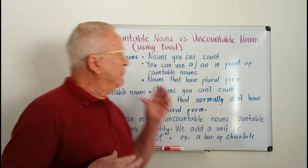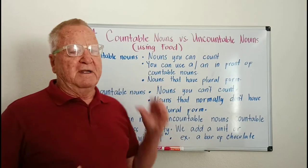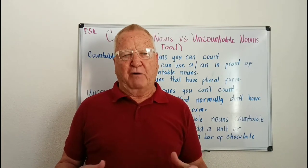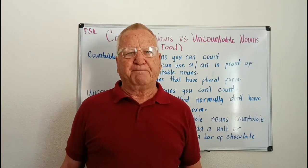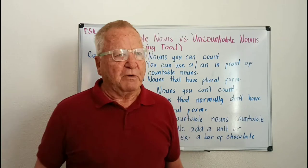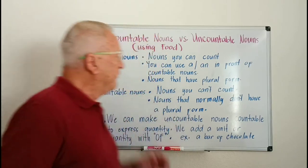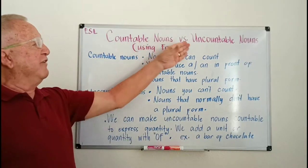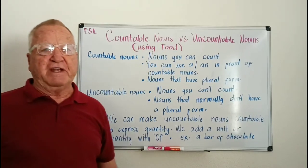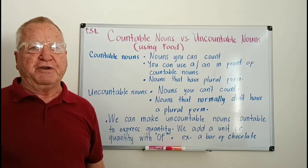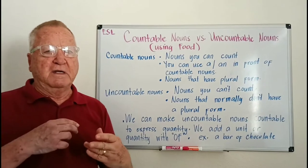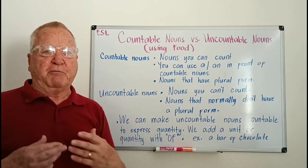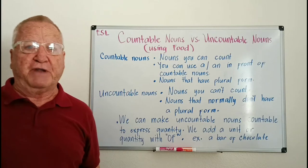Another name for the uncountable noun is mass nouns — things that you really can't count or put a plural on. We're going to look at the definitions of countable versus non-countable or mass nouns, and we're going to be using food and drink to show how these work.